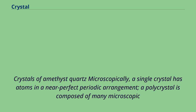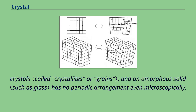Crystals of amethyst quartz: microscopically, a single crystal has atoms in a near-perfect periodic arrangement. A polycrystal is composed of many microscopic crystals, and an amorphous solid has no periodic arrangement even microscopically.